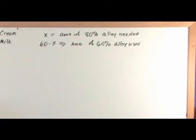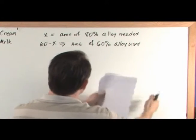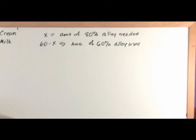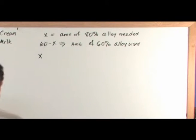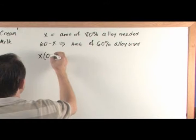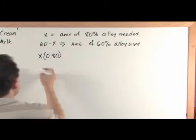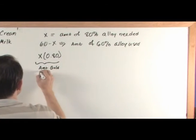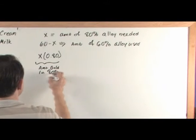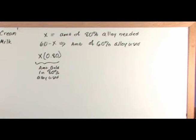Writing our equation — just like in a mixture problem where we equate the amount of fat on the left with fat on the right, here we're going to equate the amount of gold on the left with gold on the right. So we have X, which is the amount of the 80% alloy needed, times 0.8 — this gives us the amount of gold in the 80% alloy used, the amount of gold dumped into the mixture.